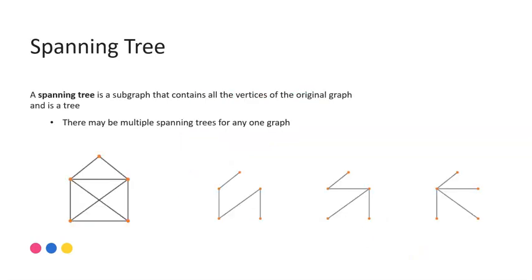Our second definition, so building on that, is what we call a spanning tree. A spanning tree is a subgraph that contains all of the vertices, so every vertex from the original graph, but is also a tree. So we must use all of the vertices, but we must use the edges from the original graph. So we can't use or make up new connections that didn't already exist. And note there might be multiple spanning trees for any one graph.